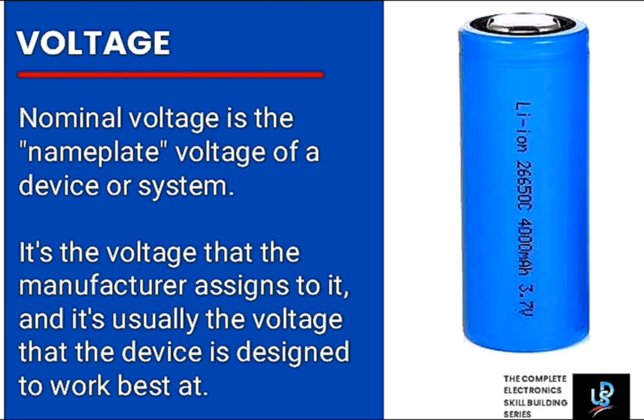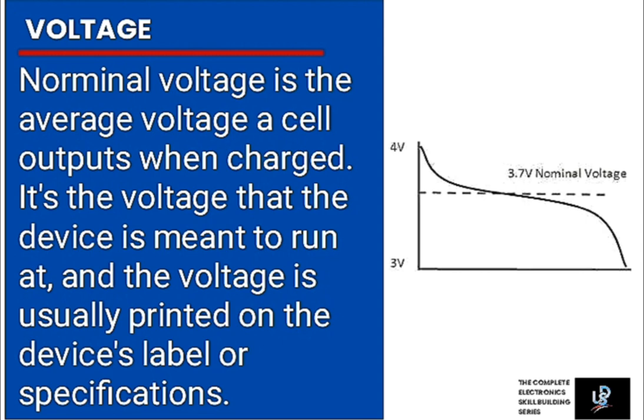It's usually the voltage that the device is designed to work best at. It is the average voltage a cell outputs when charged. It is the voltage that the device is meant to run at, and the voltage is usually printed on the device label or specifications. This simply means nominal voltage is the standard voltage rating given to a battery or other electrical components. Take a look at the graph, representing the state of a charged lithium battery. The nominal voltage at 3.7V and fully charged voltage at 4V depending on the type of battery.